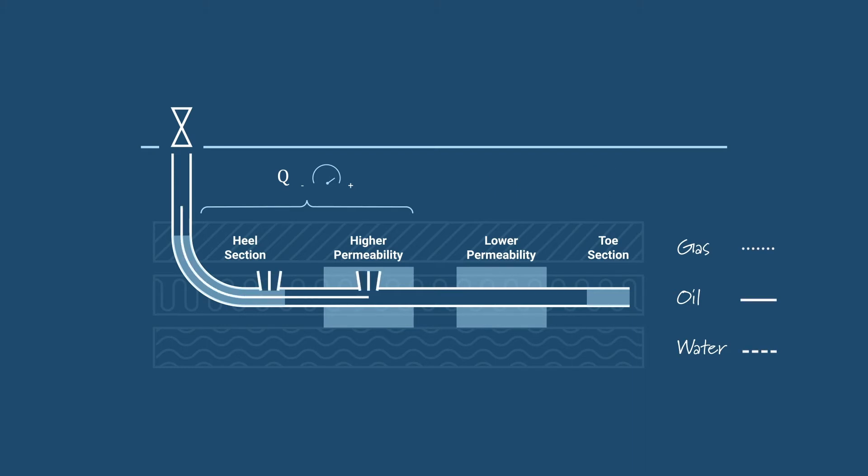Consequently, step one of production entails draining oil in only certain predetermined areas. Depending on the reservoir, this process can take anywhere from a few weeks to a few months.